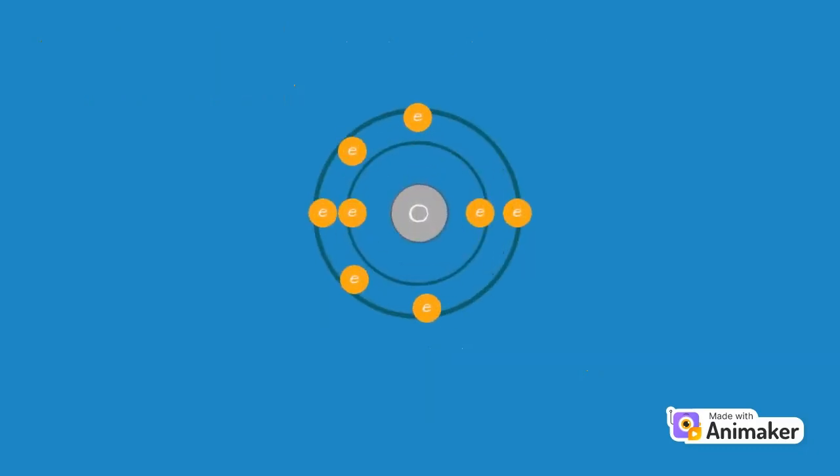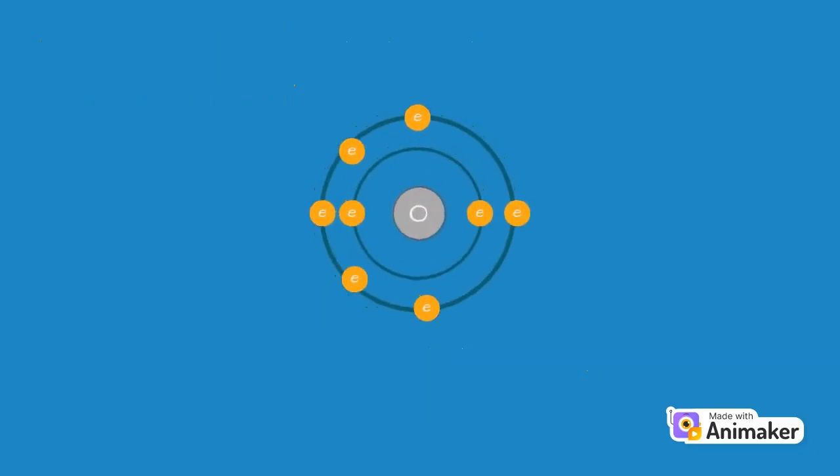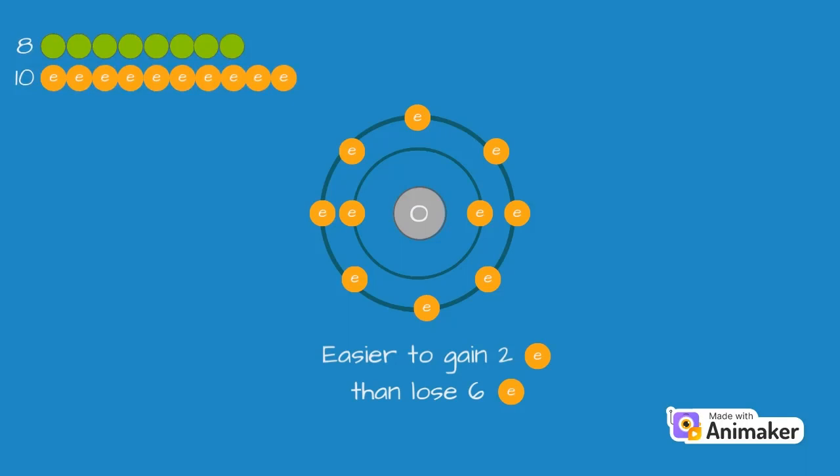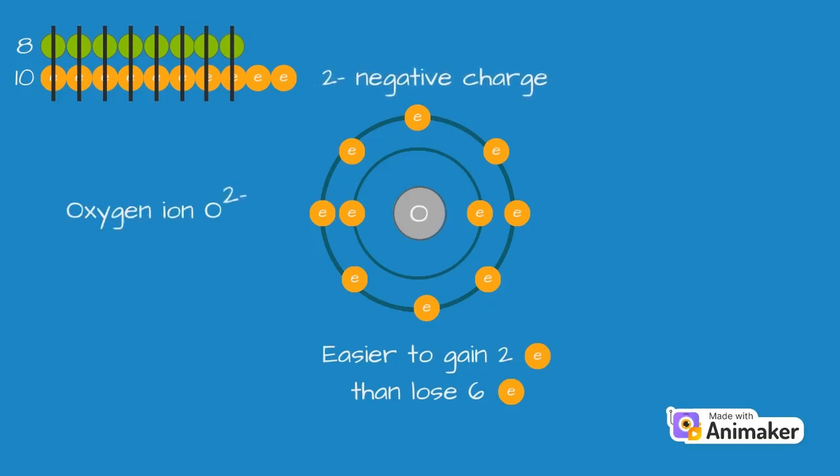Similarly, oxygen has 6 electrons in its outer shell, making it unstable. So, it has to either lose 6 electrons or gain 2 electrons to become stable. But it's easier to gain 2 electrons than lose 6 electrons. So, after gaining 2 electrons, even though the oxygen atom still has 8 positive protons, it now has 10 negative electrons. The charge of the 8 protons and electrons will cancel out, and overall, it's going to have a 2 minus negative charge, and so we call it an oxygen ion rather than an oxygen atom.